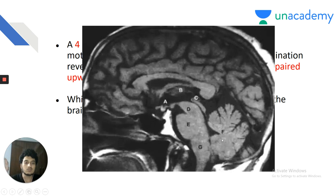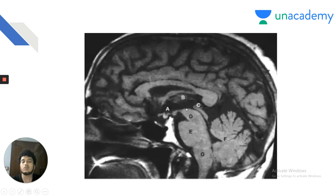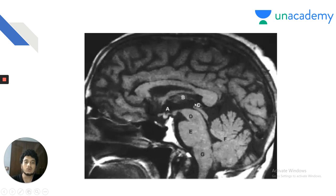Identifying the brain image: D is midbrain, E is pons, G is medulla, F is cerebellum. C is the pineal gland — a pineal gland tumor enlarges and compresses the tectum of the midbrain. The tectum of the midbrain contains the superior and inferior colliculi. Superior colliculi are in the visual pathway — so upward gaze palsy results from compression of the tectum of the midbrain by the growing pineal tumor.